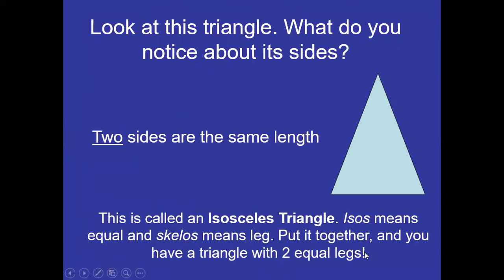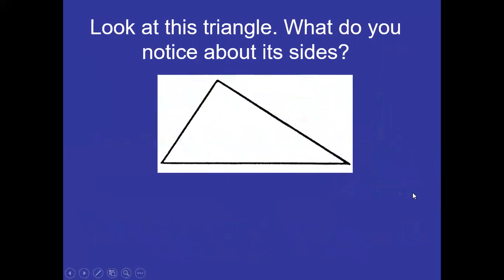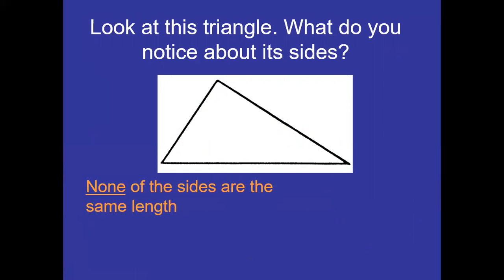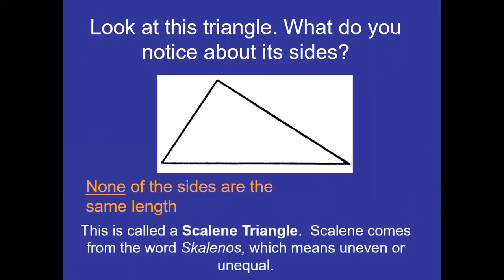That second triangle is known as an isosceles triangle. 'Isos' means equal and 'scelos' means leg, so when you put it together you have a triangle with two equal legs — the two sides are equal. The third type has all three sides looking different — they are not of the same length — so it is known as a scalene triangle. 'Scalene' comes from the word 'scalenos,' meaning uneven or unequal.